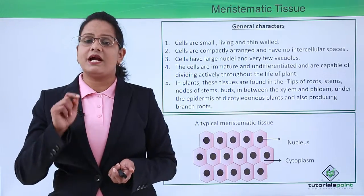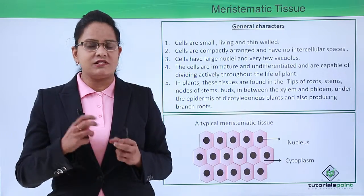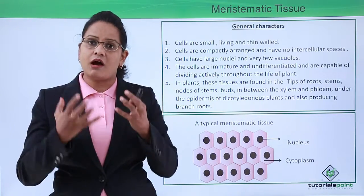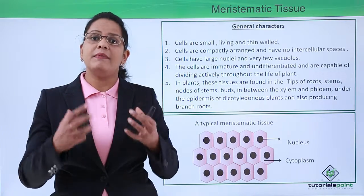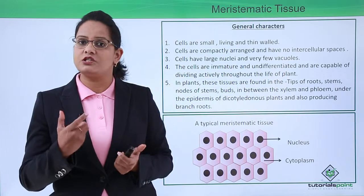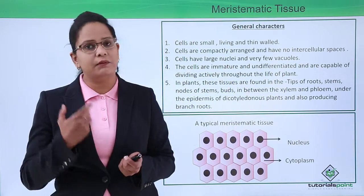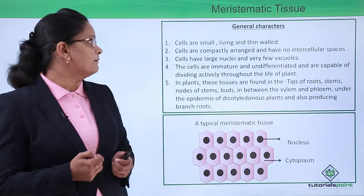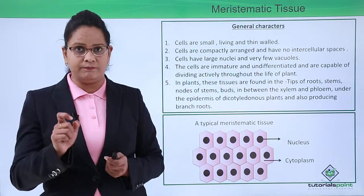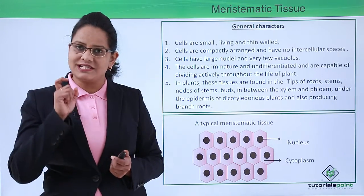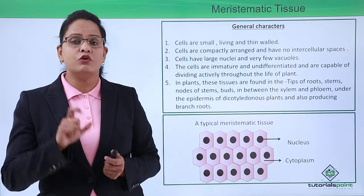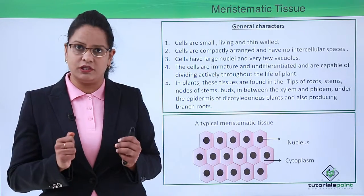All tissues are made up of cells, and the features of these cells make up the feature of the complete tissue. So how do the cells in a meristematic tissue look like and how do they behave? The cells are small, they are living, and the wall is very thin, so the cellulose deposition is less. They are living, small, and thin-walled cells. Also these cells have a bigger nucleus.